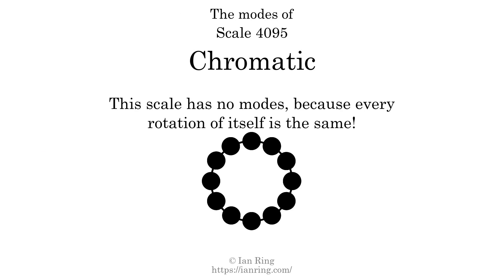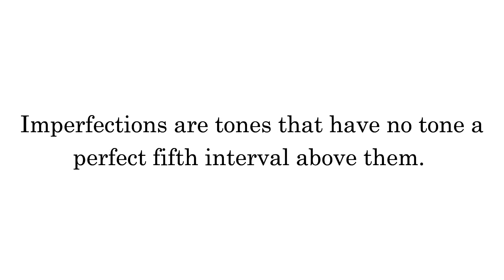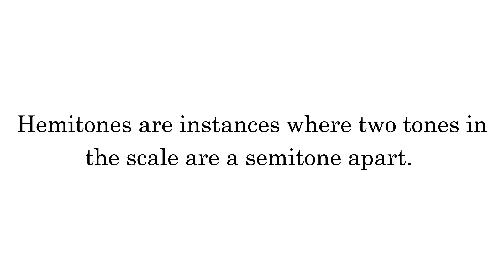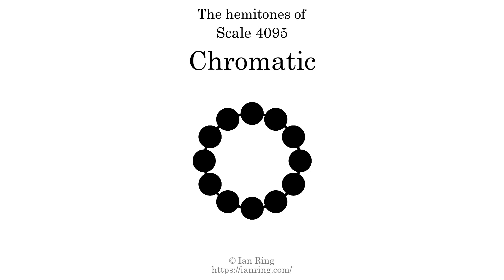Scale 4095 has no modes, because every rotation of itself is the same. Imperfections are tones that have no tone a perfect 5th interval above them. This scale has no imperfections. Hammertones are instances where 2 tones in the scale are a semitone apart. This scale has 12 hammertones. They are at positions: here, here, here, here, here, here, here, here, here, here, here, here.